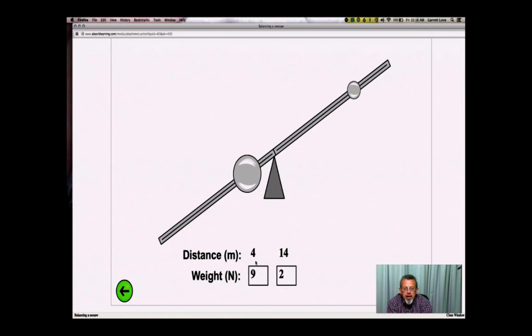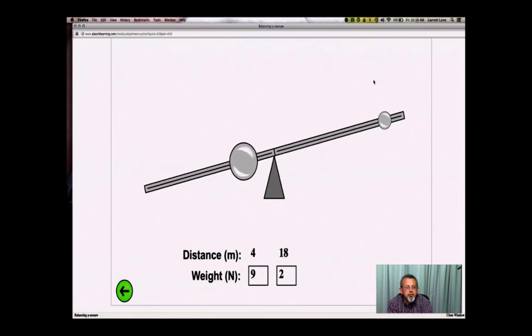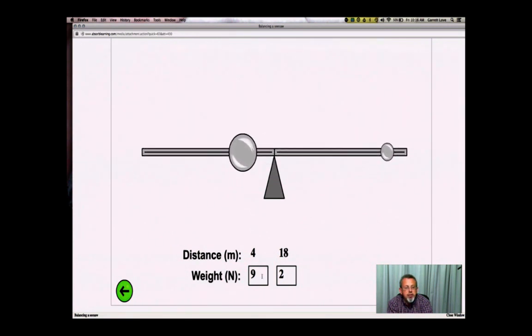What's the moment on my left side if it's at 9 and 4? What's the moment on my left side? 9 times 4? 36. So, if I have 36 on my left, what do I need to do to get 36 on my right? 2 times 18. So, the left side is 36, the right side is 36. The product of both sides, which is the weight times the moment arm, is equal.